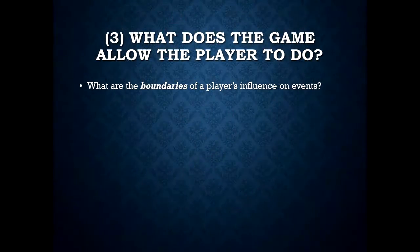The third question is: what does the game allow the player to do? This is about the boundaries of a player's influence on events. There are many different kinds of games with different interfaces, different abilities, different ways to control the game, and non-interactive segments you can't control at all. If you think about choose-your-own-adventure books, the player only gets to choose among a couple of options. In Bioshock, it's still fairly linear compared to sandbox games like Skyrim, but you do have a lot more choices, a lot more interactions, a lot more power as a co-narrator than in those books.